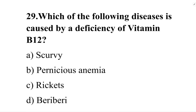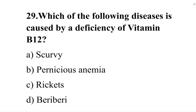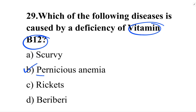Next question: which of the following diseases is caused by a deficiency of vitamin B12? Option A: scurvy. Option B: pernicious anemia. Option C: rickets. Option D: beriberi. The correct answer is option B, pernicious anemia. It is caused by the deficiency of vitamin B12.